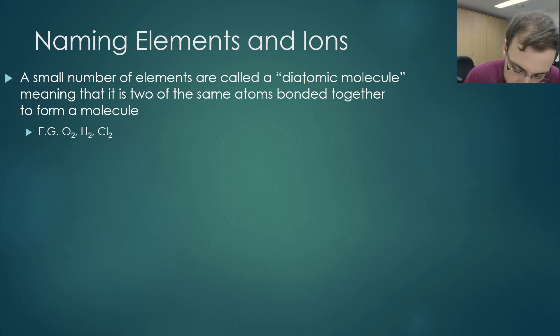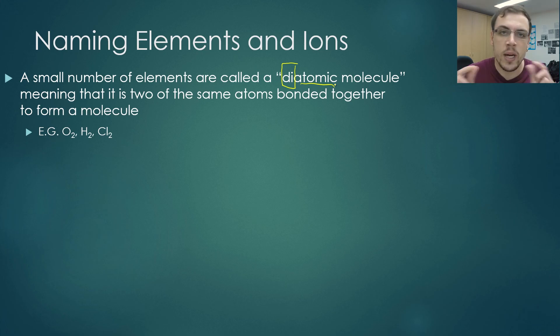If we look here at diatomic, we can see that we've got di. Di means two and atomic, well, atom. So diatomic molecule is two atom molecule.